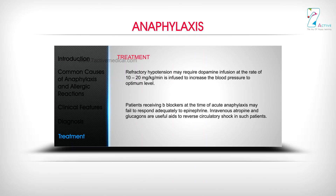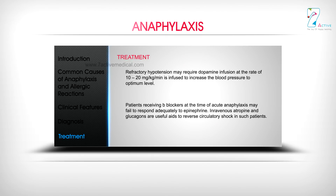Patients receiving beta blockers at the time of acute anaphylaxis may fail to respond adequately to epinephrine. Intravenous atropine and glucagon are useful aids to reverse circulatory shock in such patients.